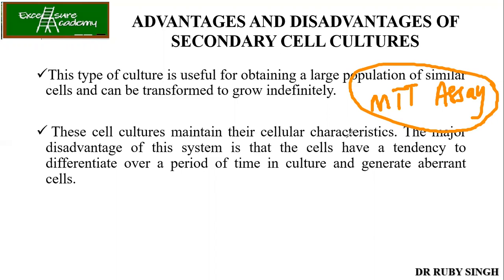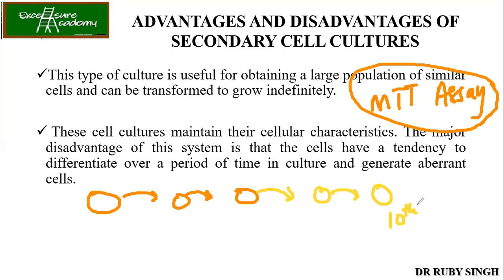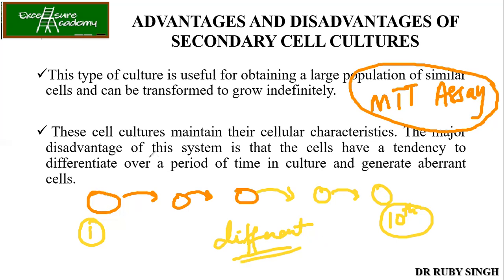Advantages of secondary culture: it is useful for obtaining a large population of similar cells and they grow indefinitely. The disadvantage is that they differentiate over a period of time — you start with one particular type of cell and keep culturing, but eventually the cells lose their properties. If you compare the first-generation cells with the tenth-generation cells, they look different. After repeated subculturing, the cells lose their original properties and generate aberrant cells that are no longer similar to their parent cells.